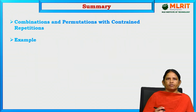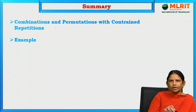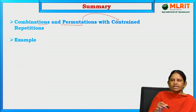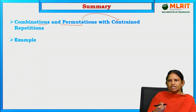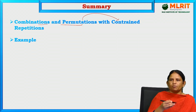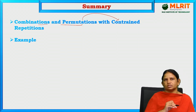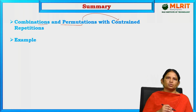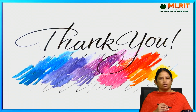So, what we have discussed is what is meant by combination and what is meant by permutation with constrained repetition — that means conditional repetition, how many ways a particular letter is repeated. Those conditions you apply before going to solve the problem for combination and permutation. We can understand those things with the help of examples. Thank you.